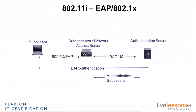The way it works is that you have the supplicant — your laptop — the authenticator or NAS network access server, which is the access point or the access point/controller pair. And then of course there is your authentication server. You try to get access to the network from your laptop by sending 802.1x/EAP requests to the authentication server, and those transit through the authenticator. The authenticator translates your queries — which are 802.1x/EAP type — into RADIUS language to forward them to the authentication server. The authentication happens between you and the authentication server, with the authenticator in the middle just relaying traffic from 802.1x/EAP to RADIUS and back. And at some point, if everything works well, you get an access-accept from the authentication server sent to the authenticator, and then your access will be granted.